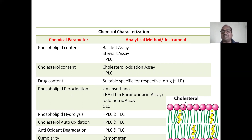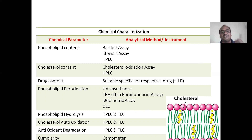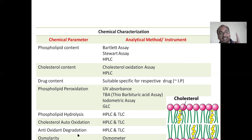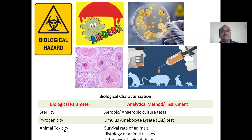Phospholipid peroxidation: these phospholipids undergo peroxidation and oxidation, determined by UV absorbance, TBA (thiobarbituric acid), iodometric assay, and GLC (gas-liquid chromatography). Many analytical techniques are involved. Phospholipid hydrolysis is determined by HPLC and TLC (thin layer chromatography). Cholesterol oxidation, antioxidant degradation, and osmolarity by osmometer are also included.